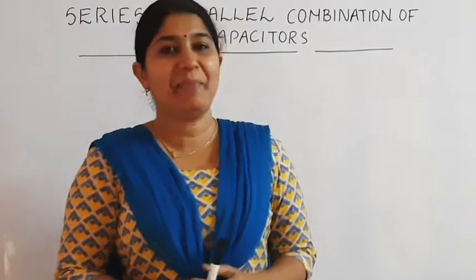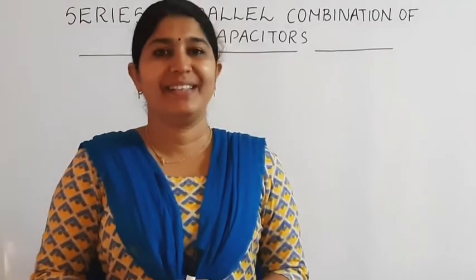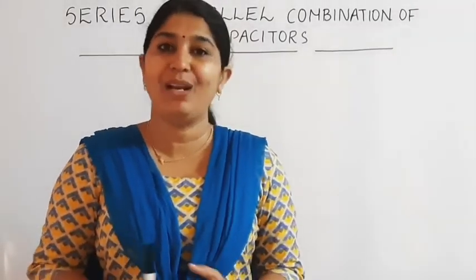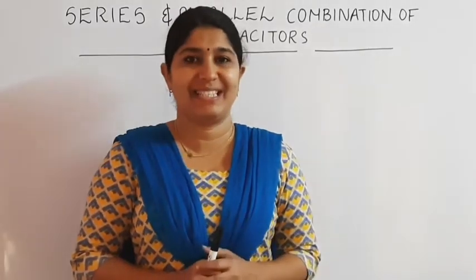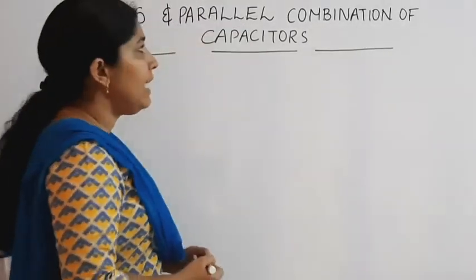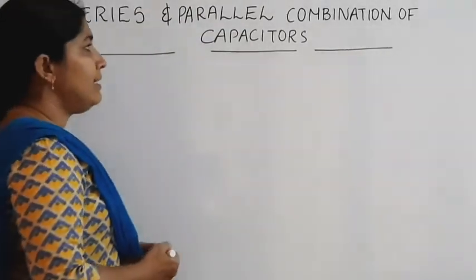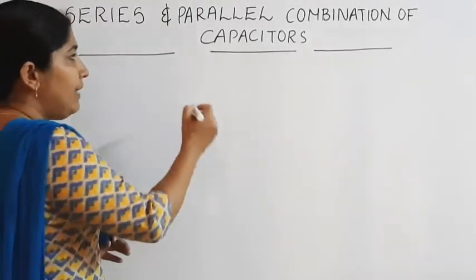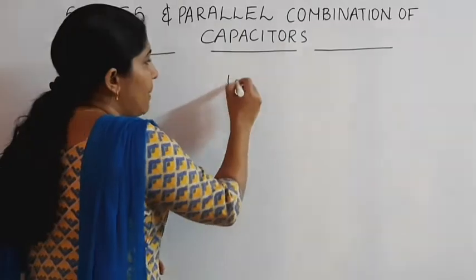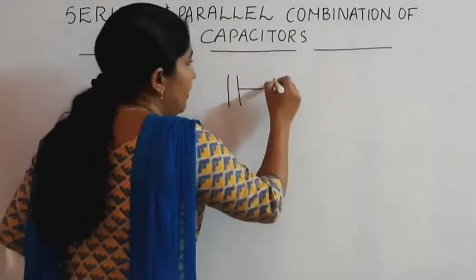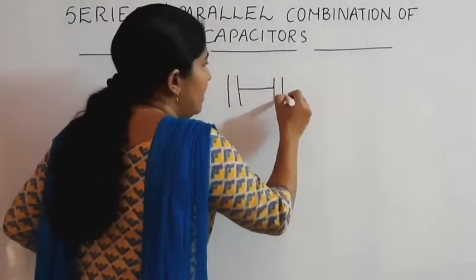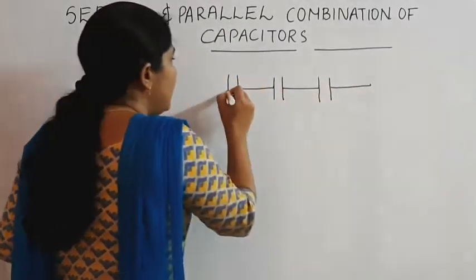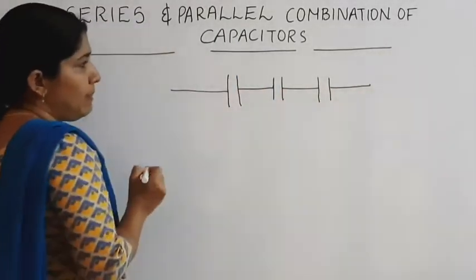Hi students, welcome back. Today we are going to discuss about series and parallel combination of capacitors. Consider three capacitors C1, C2 and C3 and they are connected in a series manner.